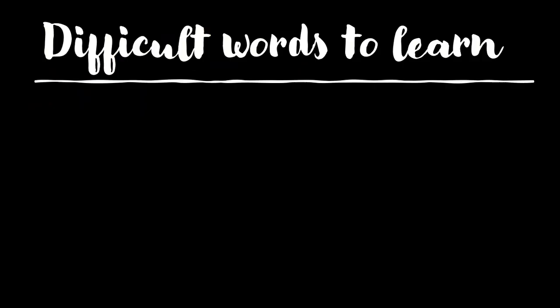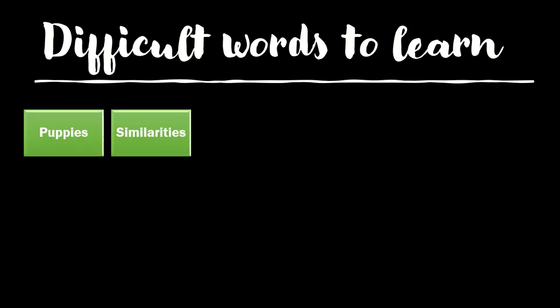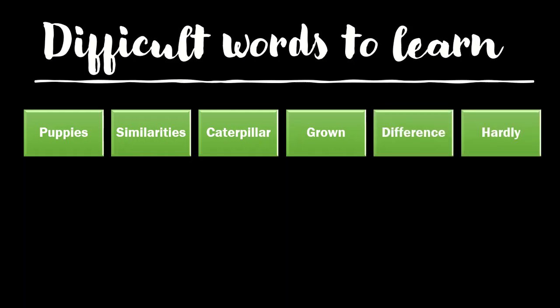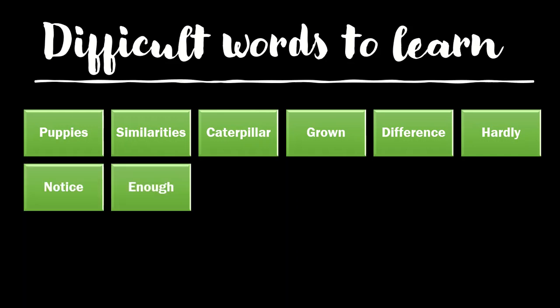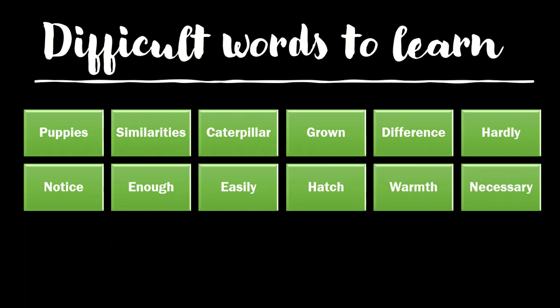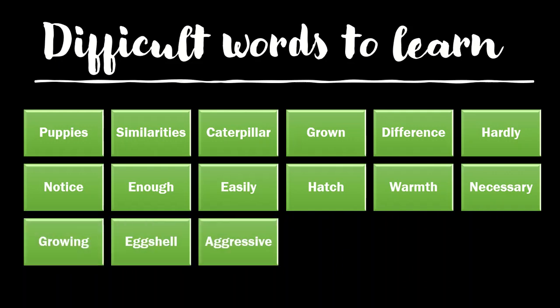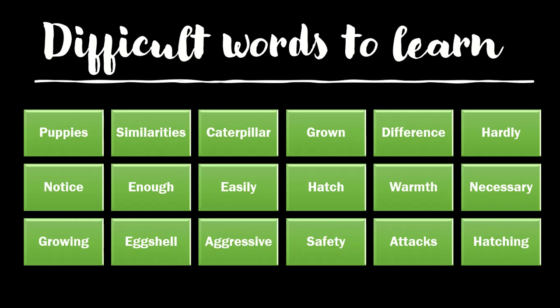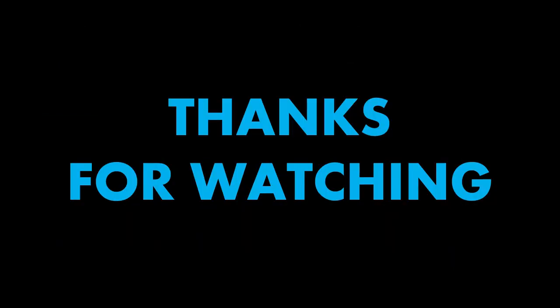Now I am going to give you some difficult words to learn: puppies, similarities, caterpillar, groan, differences, hardly, notice, enough, easily, hatch, vomit, necessary, growing, actual, aggressive, safety, attacks, hatching. These are the difficult words that you should learn. Note them down in your notebook, and I want you to read this lesson — the first section — very carefully and you will understand more.